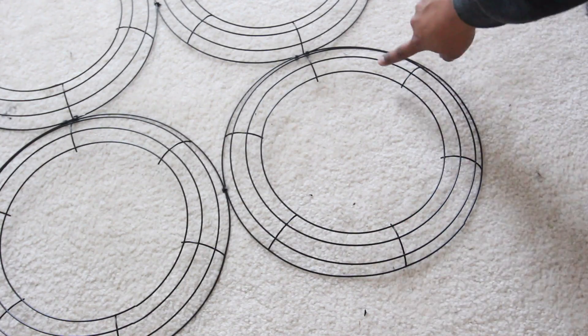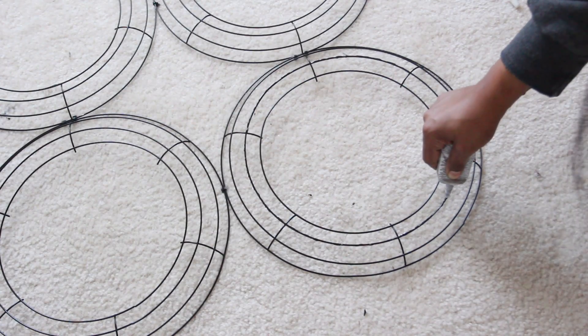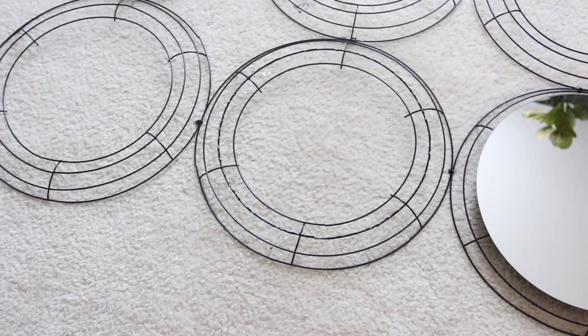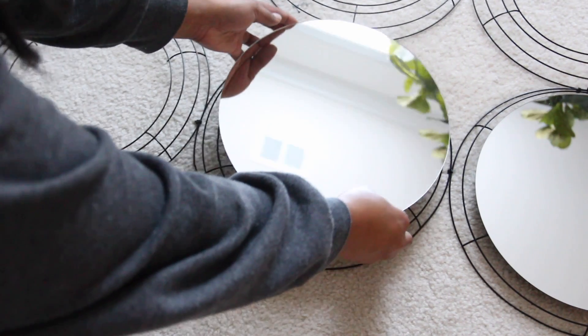Once the paint dried, I placed E6000 glue on the second row of each wire frame and then added a 12 inch round mirror on top.